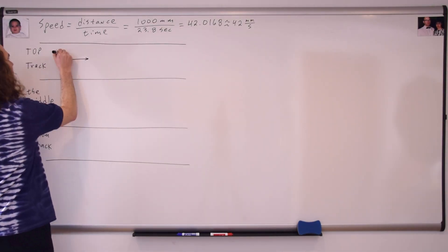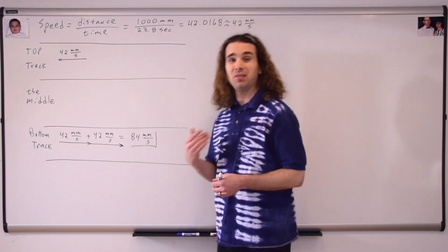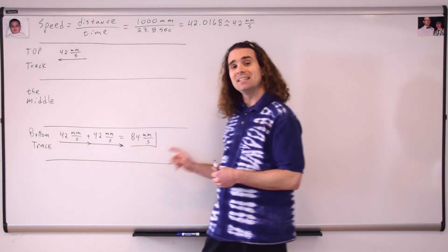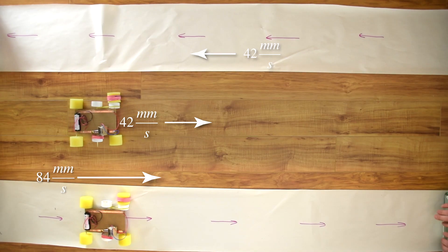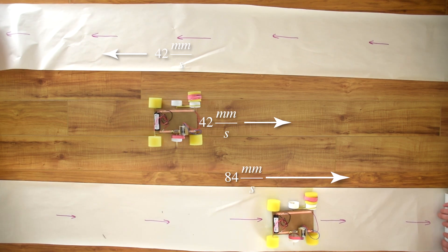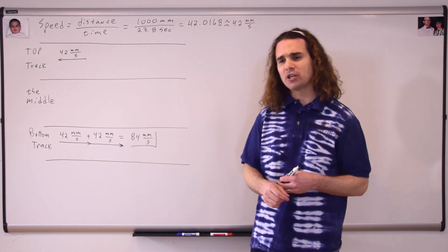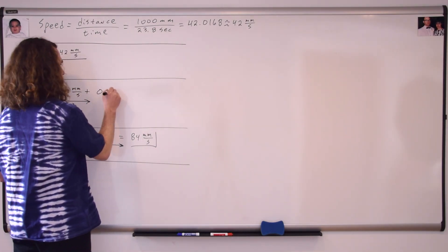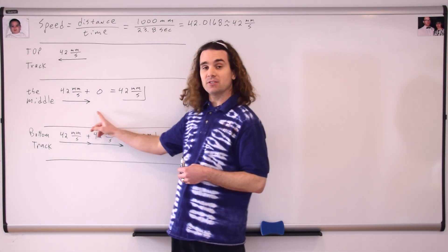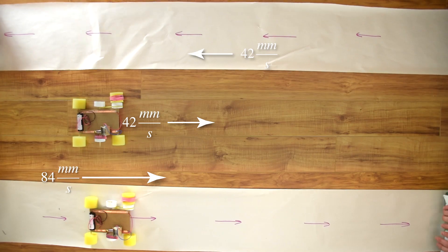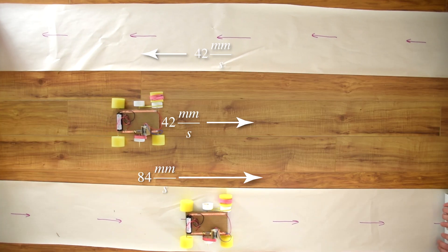The speed of the car plus the speed of the track, or 42 millimeters per second, plus 42 millimeters per second, is equal to 84 millimeters per second. In other words, if Slow Velocity Racer races on the bottom track, she will be moving at 84 millimeters per second. Bo, how fast will she be moving if she races between the two tracks? 42 millimeters per second. Correct, Bo. The speed of the race car plus the speed of the track, or 42 millimeters per second, plus zero, is equal to 42 millimeters per second.